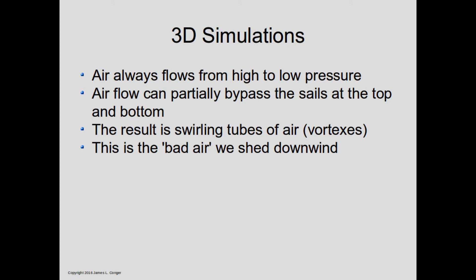At this point we're going to switch to looking at three-dimensional simulations. Air will always try to move from high to low pressure, and with a 3D simulation you can see the effect of gaps between the mainsail, jib, and the hull of the boat. These gaps allow part of the air to basically bypass the sails, resulting in vortices off both the bottom and top of the sails. This is the source of the so-called bad air which all racers are aware of and try to avoid when sailing in proximity to other sailboats.